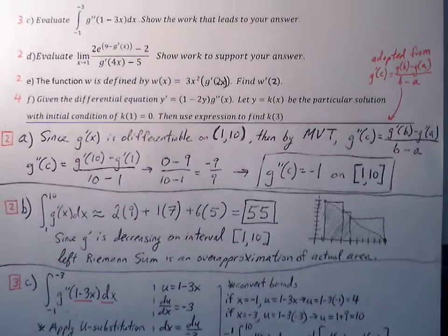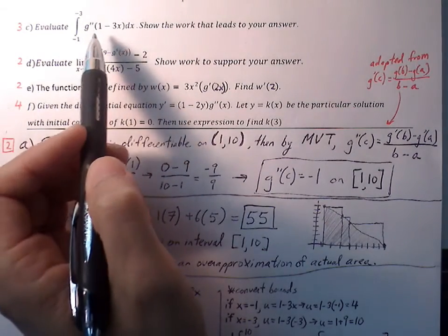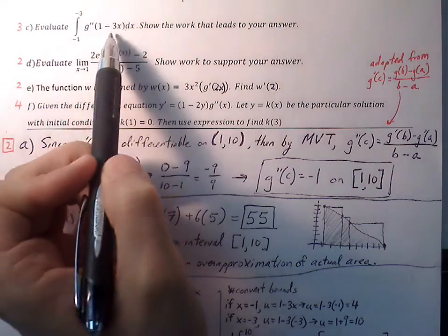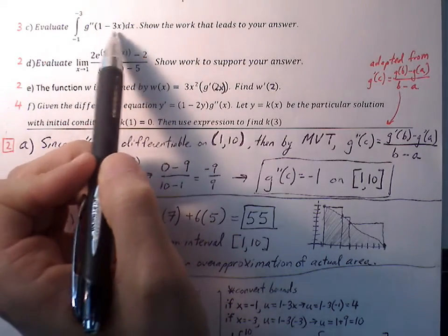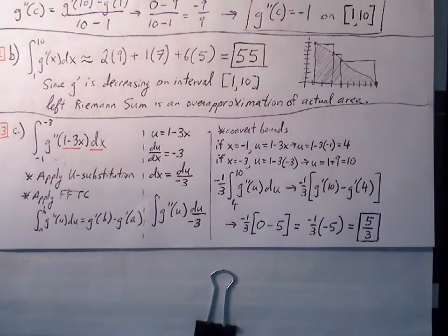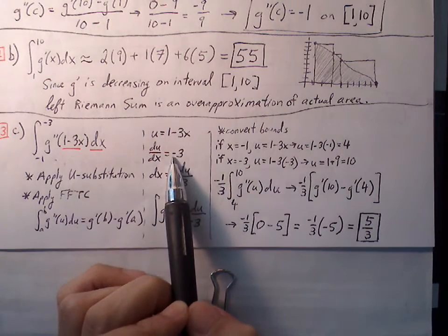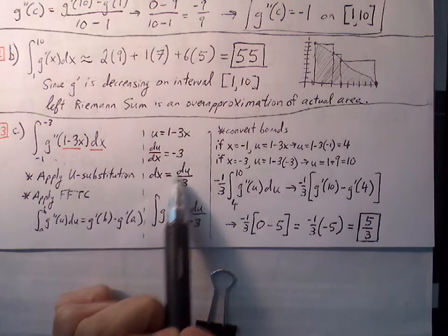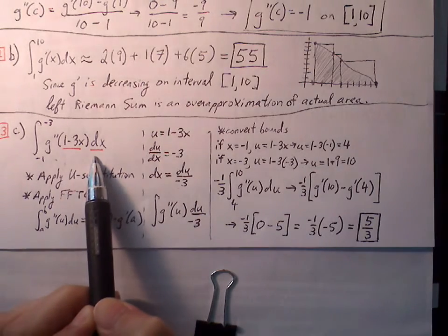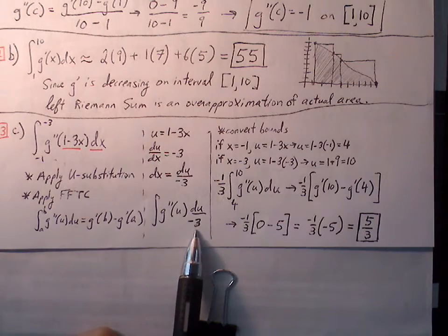Part C: evaluate the definite integral of G double prime of one minus three x. This is not something we can plug into the calculator — we'll work through it using u-substitution. We let u equal one minus three x. Then du over dx equals negative three, so dx equals du over negative three. Making our substitution, we get the integral of G double prime of u times du over negative three.